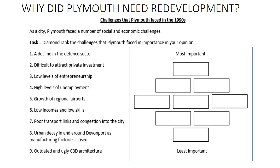One of the big questions the spec asks is: why did Plymouth need redevelopment? Hopefully you did this diamond ranking activity in your books. Plymouth throughout the 1990s faced a number of social, economic, and even environmental challenges, and as a result that led to the need for redevelopment. Taking these in turn, number one: a decline in the defence sector. Jobs in Devonport and the rebuilding of submarines, for example, began to decline in the UK as a whole, but particularly hit Plymouth during the early 90s.